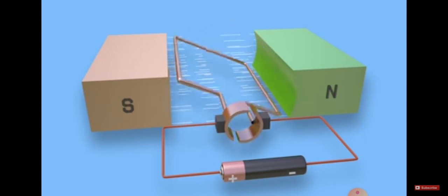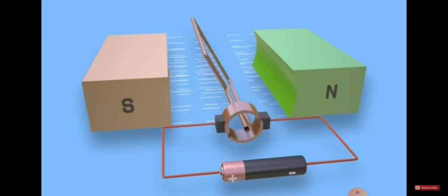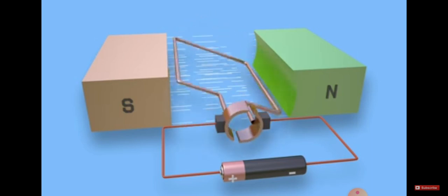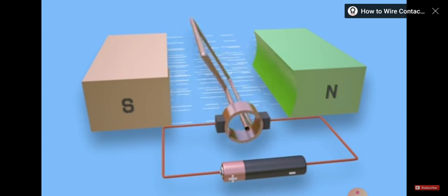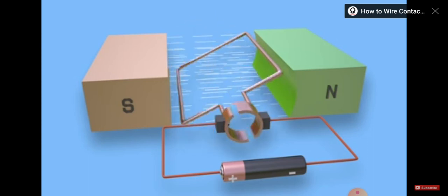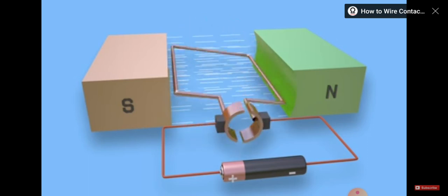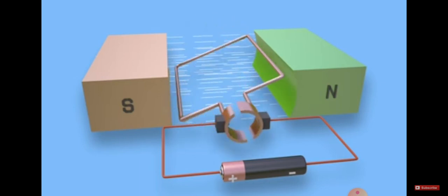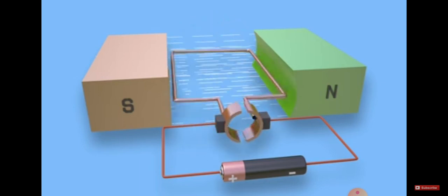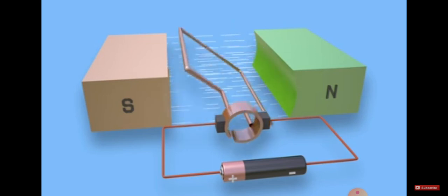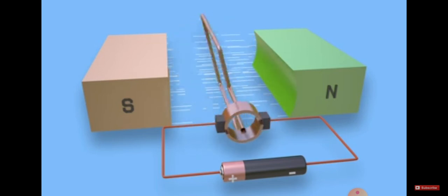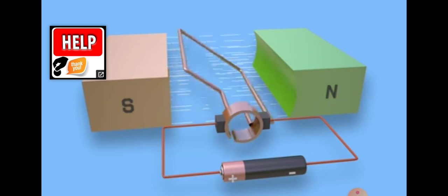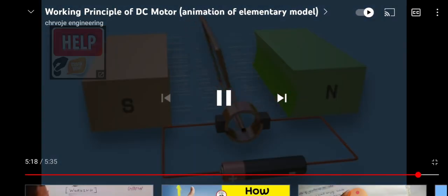The movement occurs inside the machine. You can see how the rotor rotates from the outside. This is how the machine rotates on the inside — the internal rotation drives the overall mechanical movement of the DC motor.